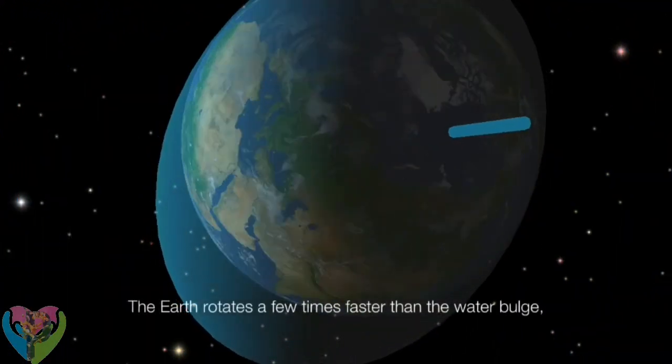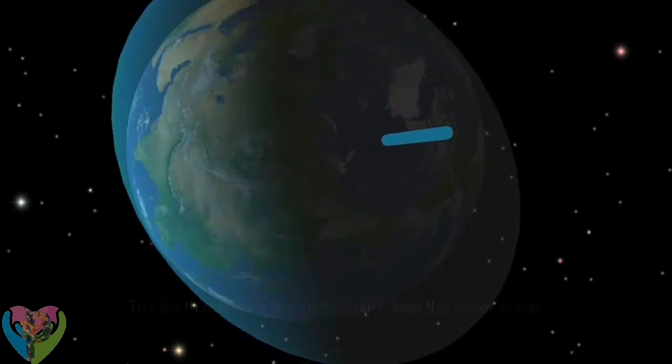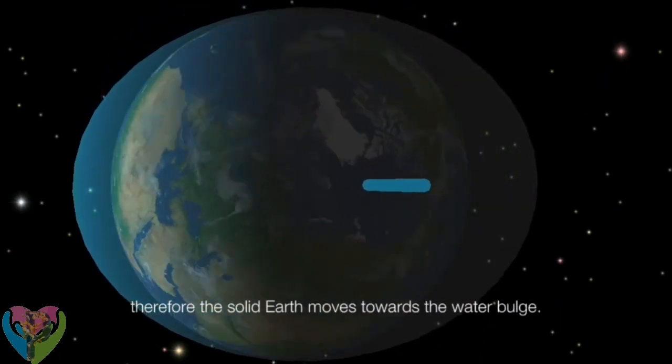The Earth rotates a few times faster than the water bulge. Therefore, the solid Earth moves toward the water bulge.